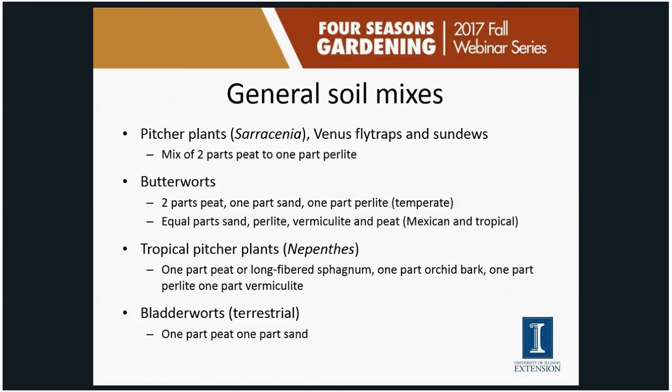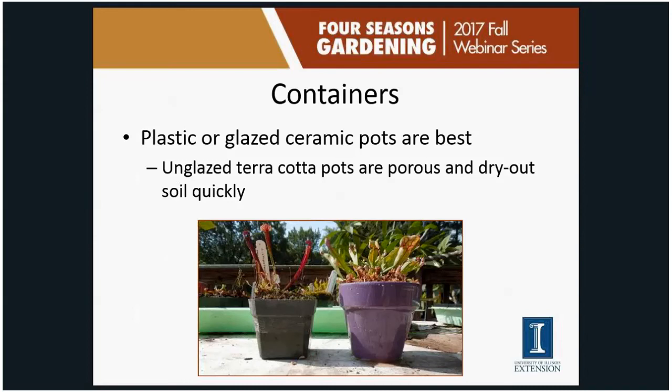For containers, use plastic or glazed ceramic pots. Avoid unglazed terracotta pots — they're porous, wick moisture out of the soil quickly, and if you're using tap water, salts can accumulate in the terracotta, harming plants. You'll also end up having to water much more frequently.